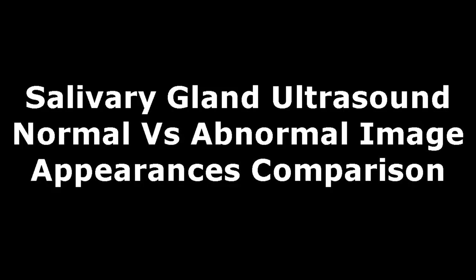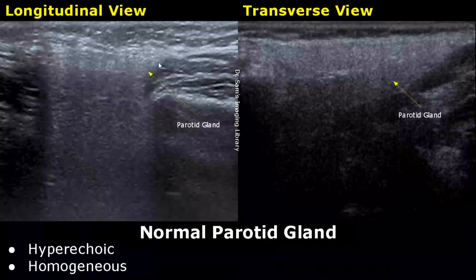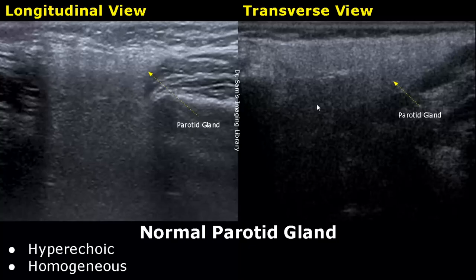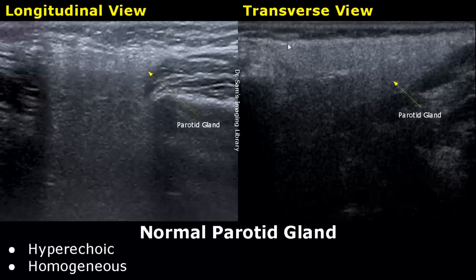Here we have a longitudinal view and a transverse view of a normal parotid gland. The parotid gland is hyperechoic and has a homogeneous echo texture. We can see a smooth echo texture of the gland.